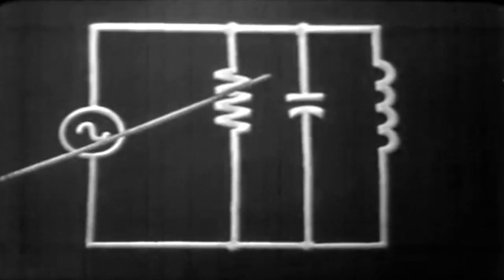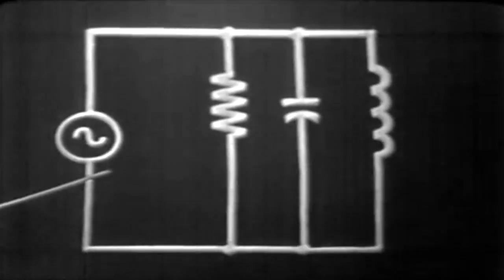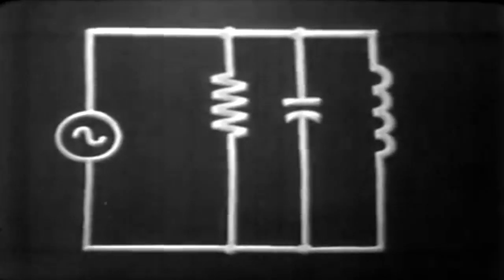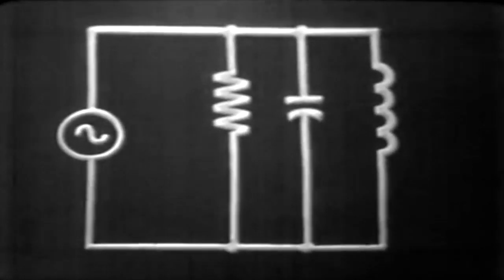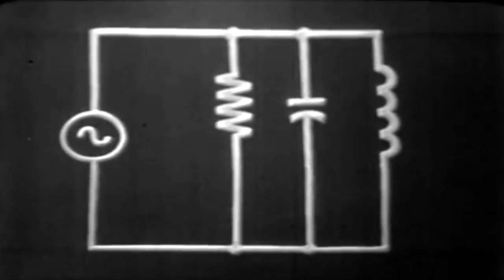The resistor voltage, the capacitor voltage, and the inductor voltage would be the same as the source voltage, because we do have a parallel circuit here. Consequently, with the same voltage across each component, we only have one voltage existing within the circuit.